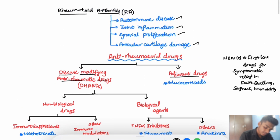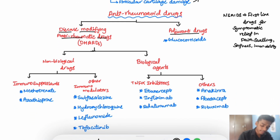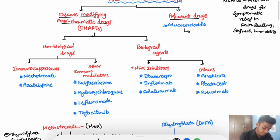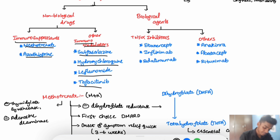Since there is autoimmune disease and joint inflammation, we need anti-inflammatory and immunosuppressant drugs. Glucocorticoids can do both — they are potent anti-inflammatory and immunosuppressant agents. Disease-modifying anti-rheumatic drugs include immunosuppressants like methotrexate and azathioprine, and other immunomodulators like sulfasalazine, hydroxychloroquine, leflunomide, and tofacitinib.